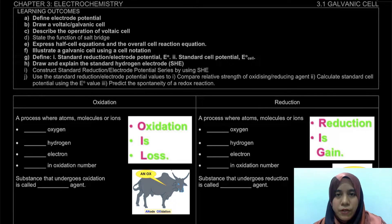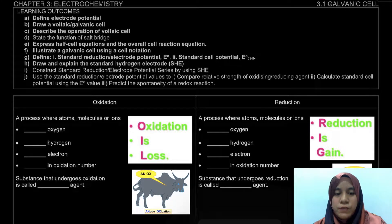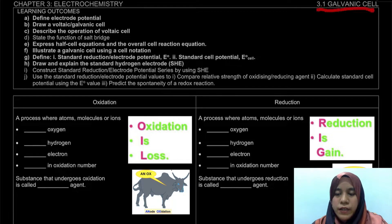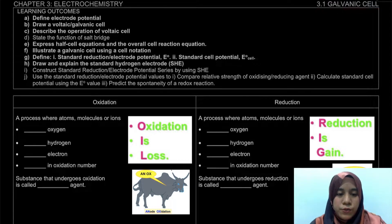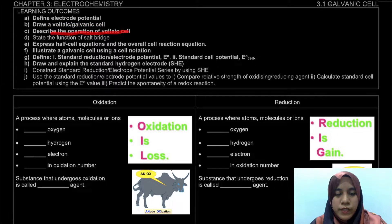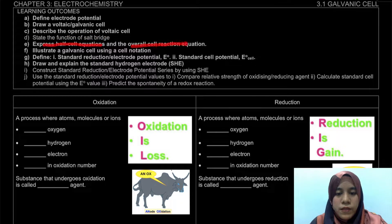Assalamualaikum and hello everyone. Welcome to the video for chapter 3, section 3.1: Galvanic Cell. In this video, what we're going to learn is to draw a voltaic or galvanic cell, to describe the operation of the voltaic cell, state the function of the salt bridge, and express the half-cell equation and the overall cell reaction equation.